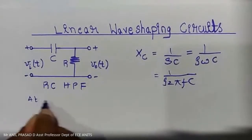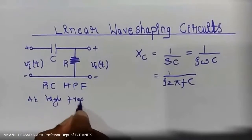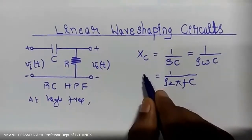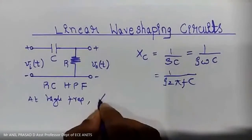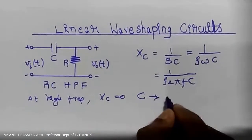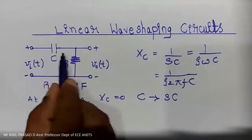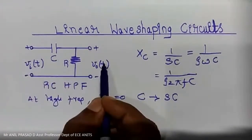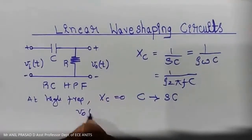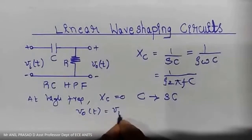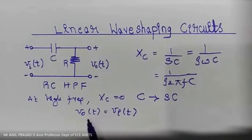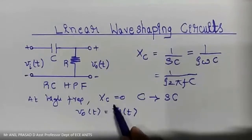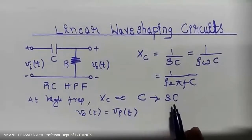At high frequency — let's say F equals infinity — XC = 1/infinity = 0. So XC equals 0 means your capacitor is going to act as a short circuit. When your capacitor is short circuit, the output voltage is the same as the input voltage — your entire input voltage is passed on to the output side. So for high frequencies, your output is same as your input, meaning the circuit is passing the input signals to the output side.